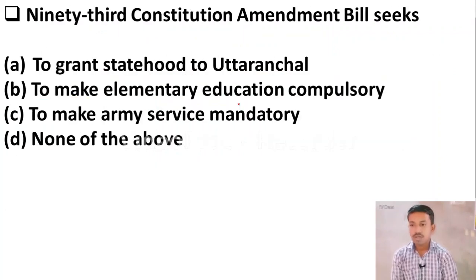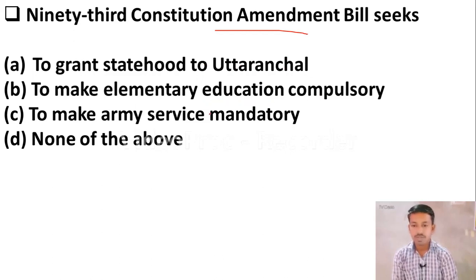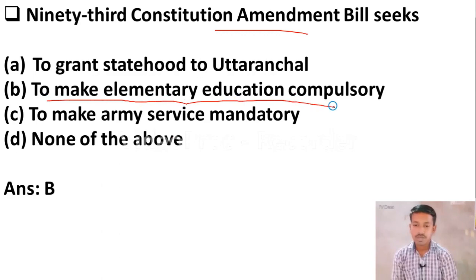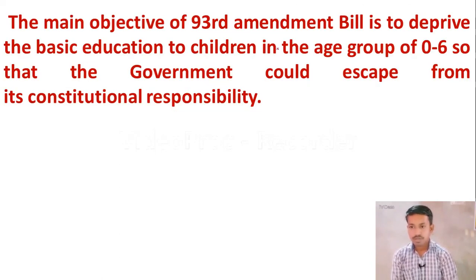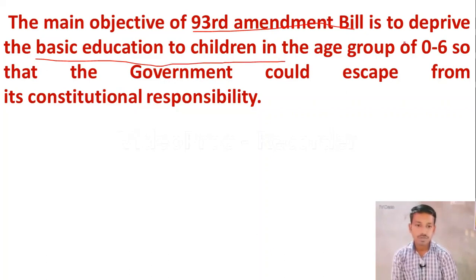Next question: The 93rd Constitution Amendment Bill relates to — Option A: to grant statehood to Uttaranchal. Option B: to make elementary education compulsory. Option C: to make army service mandatory. Option D: none of the above. The right answer is Option B — to make elementary education compulsory. The main objective of the 93rd Amendment Bill is to provide basic education to children in the age group of 0 to 6.